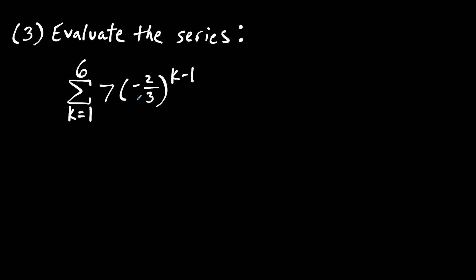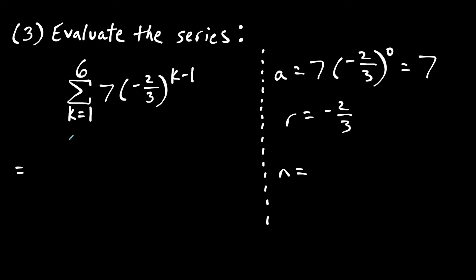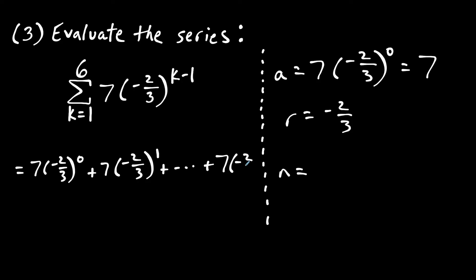For the last example, we look at a case where r is negative. Plugging in k equals 1 gives negative 2 thirds to the 0 power, so the first term a equals 7. The common ratio r is negative 2 thirds. Expanding from k equals 1 to 6, we get terms with exponents 0 through 5 — that's 6 different terms, so n equals 6.